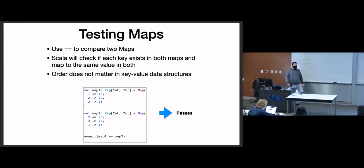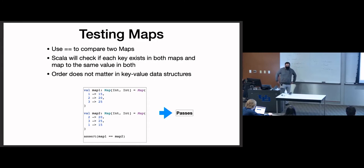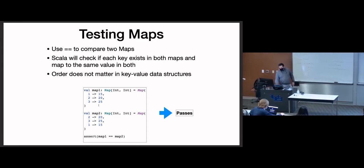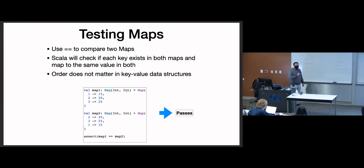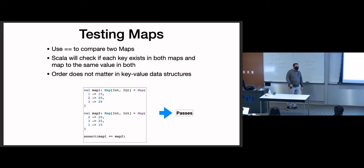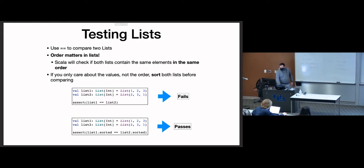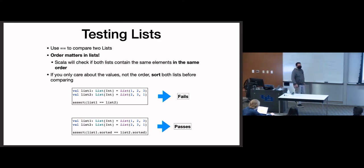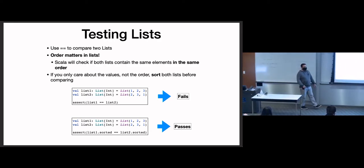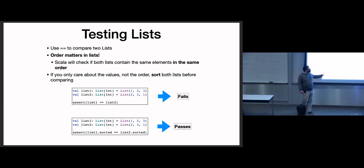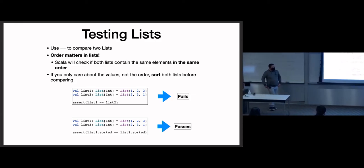Comparing maps is simple — just throw == at it, no worries. If it were a map of int to double then you'd have truncation errors and it becomes more complex, but we're not going to throw that at you this semester since it's just tedious and doesn't test a new concept.